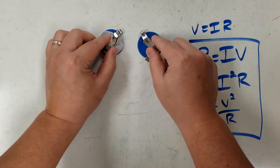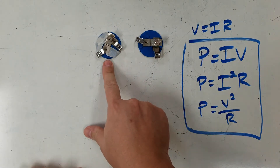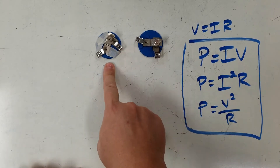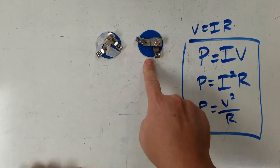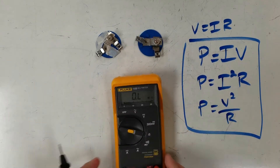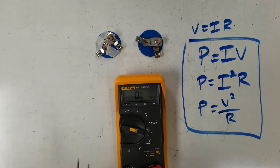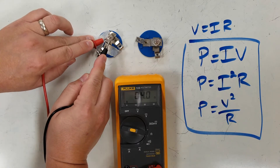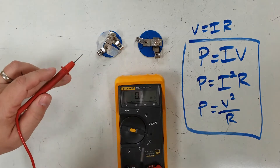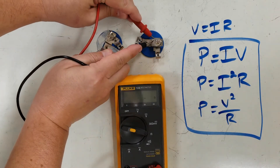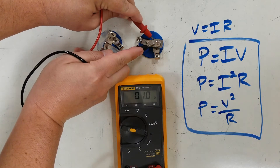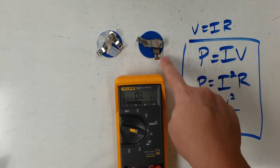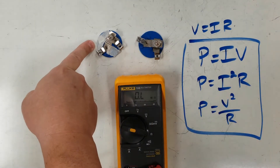Here are two bulbs. The one with tape on it is the low-power bulb based on its voltage and current ratings, and the other is the high-power bulb. We can take a multimeter and measure the resistance. The low-power bulb has a resistance of about 4 ohms. The high-power bulb is about 1 ohm. So: high-power bulb, small resistance; big power, small resistance; small power, big resistance.